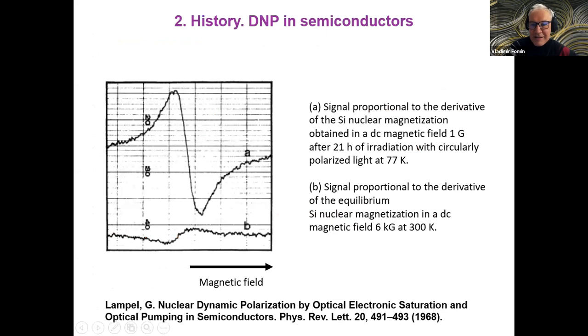This is due to Lampel. I would like to go just to his results because they are remarkable. It's a classical work now, but it remains very heuristically motivating. What is here? Here is the signal proportional to the derivative of the silicon nuclear magnetization. It's very pure silicon, highest purity which was available at the time. Obtained in a DC magnetic field, one Gauss. This is upper curve. It's derivative of the EPR response or NPR response. The lower line is a signal proportional to the derivative of the equilibrium silicon nuclear magnetization in a magnetic field 6,000 Gauss.